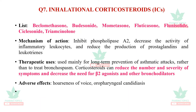Question seven is inhalational corticosteroids. The list includes beclomethasone, budesonide, mometasone, fluticasone, flunisolide, ciclesonide, and triamcinolone. Mechanism: they inhibit phospholipase A2, decrease the activity of inflammatory leukocytes, and reduce the production of prostaglandins and inflammatory leukotrienes. They are used mainly for long-term prevention of asthmatic attacks rather than to treat acute bronchospasm. Corticosteroids can reduce the number and severity of symptoms and decrease the need for beta-2 agonists and other bronchodilators.